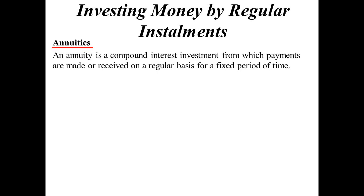We're going to look at some finance stuff here, but we're going to bring it back to maths because that's what makes it work well. Investing money by regular installments — compound interest investments which are received at a regular interval are known as annuities.